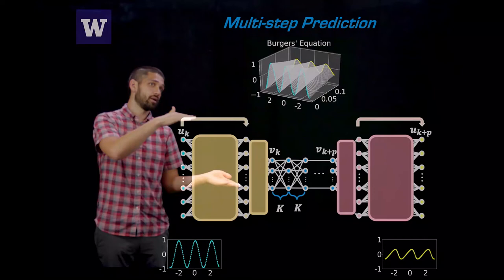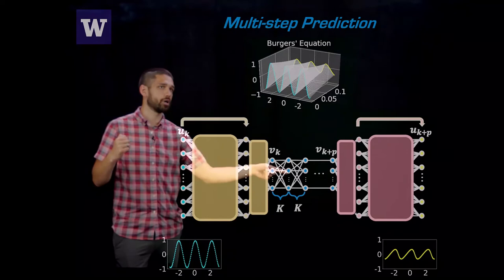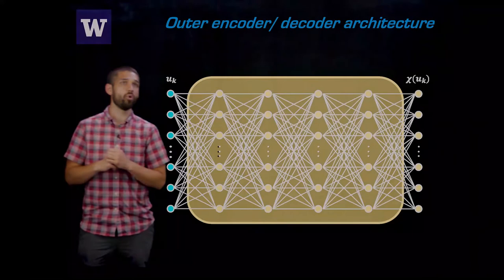So if you want to do multi-step prediction, all you have to do is you just encode once, and then you can step forward multiple steps in time in your linear space. And then you decode once, as opposed to sending things through the entire network multiple times. You do all of your dynamics, multiple steps in the future in this latent space.